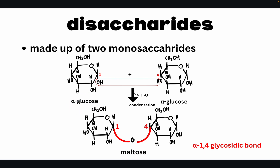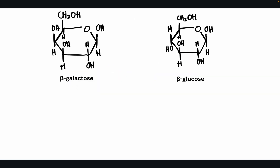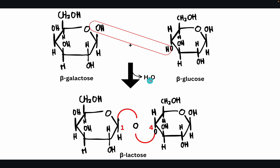This reaction is called a condensation reaction — two alpha glucoses combine, releasing water. If you want to break this bond, the reaction is called hydrolysis, where water is added to give two separate alpha glucoses. Similarly, beta-galactose and beta-glucose combine via condensation: the hydroxyl of C1 of beta-galactose reacts with the hydrogen at C4 of beta-glucose, releasing water and forming a glycosidic bond.